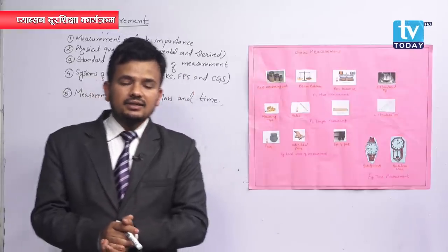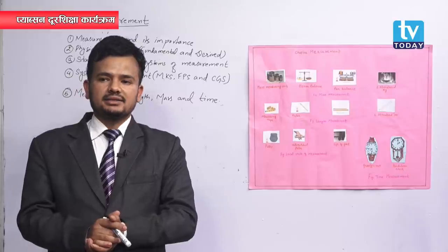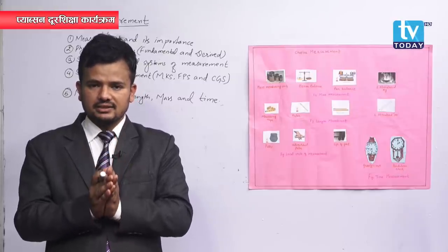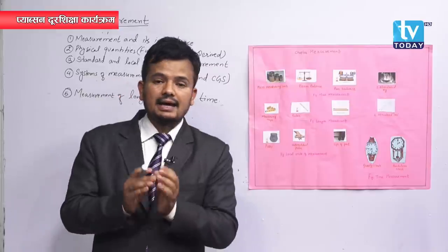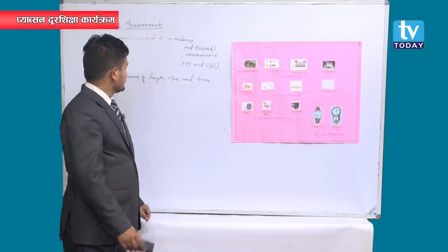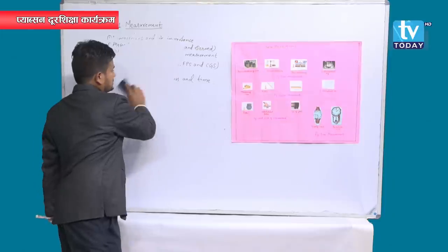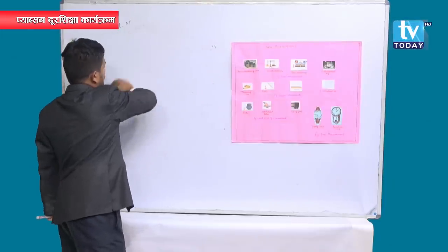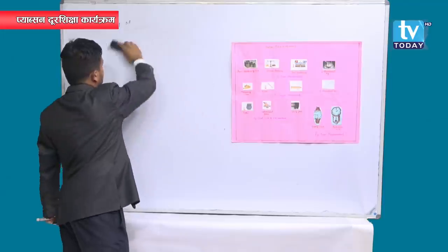These seven fundamental quantities are also called basic quantities. They have their own units. So what are the seven fundamental quantities? I am going to mention them along with their units.